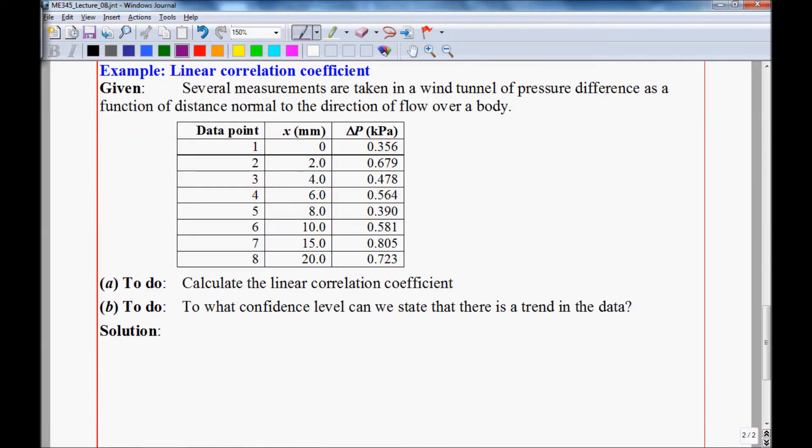Here's an example using the linear correlation coefficient. Several measurements are taken in the wind tunnel of the pressure difference as a function of x. And we have the data here. Let's first calculate the linear correlation coefficient. To do this, we'll have to use Excel.